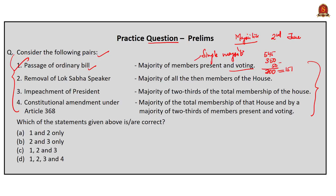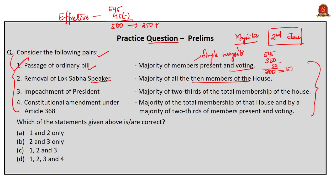Coming to the second one — the removal of Lok Sabha speaker. To remove the Lok Sabha speaker, the majority required is effective majority, that is majority of all the then members of the house. For example, out of the total strength of 545 members, assume there are 45 vacancies, so the effective strength is 545 minus 45, that is 500. So effective majority is 50% plus 1, which is 251 votes. To remove the Lok Sabha speaker we need 251 votes in this case. So the second one is also correctly matched.